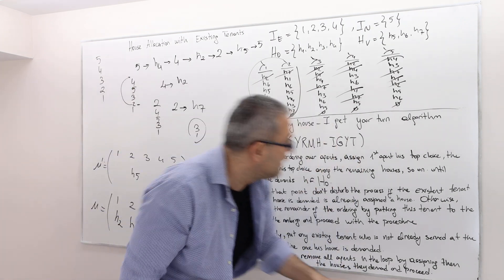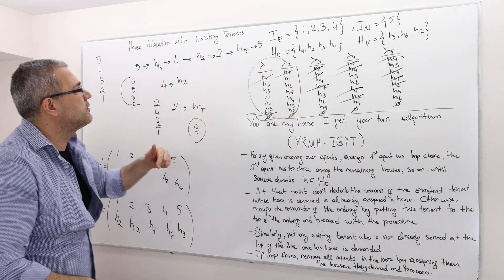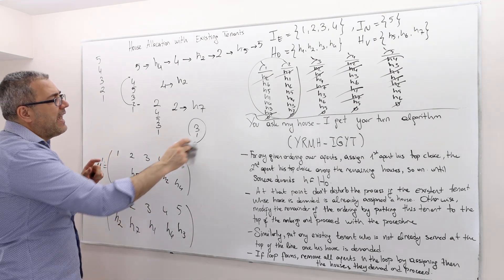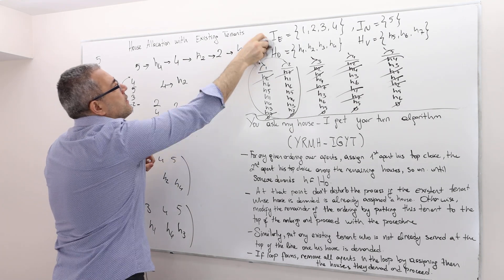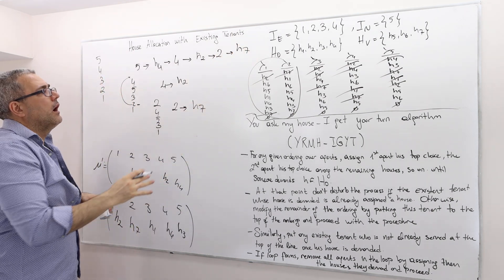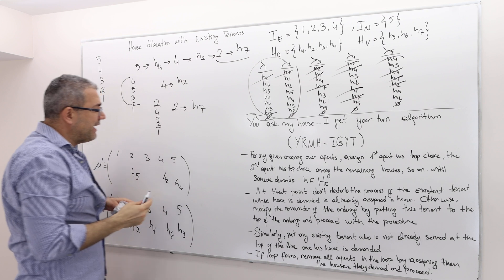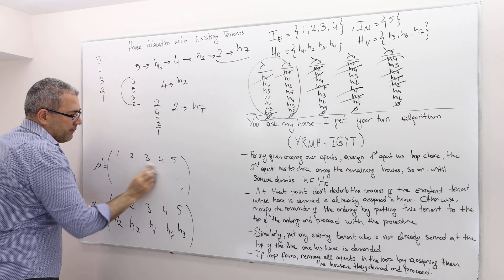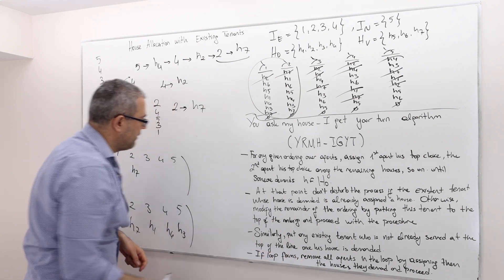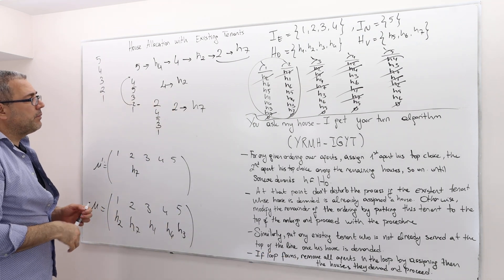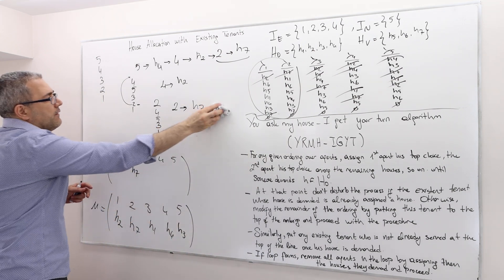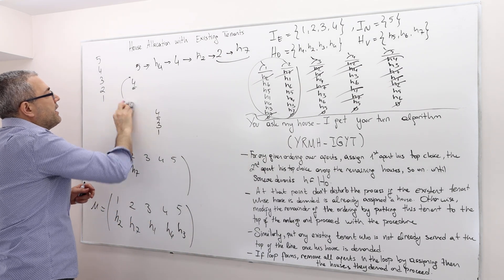According to these preferences, agent 2's best available house is H7. So there's no loop, and agent 2 can actually get house 7. We match agent 2 with house 7. Agent 2 and house 7 are out of consideration. The remaining ranking is 4, 5, 3, 1.